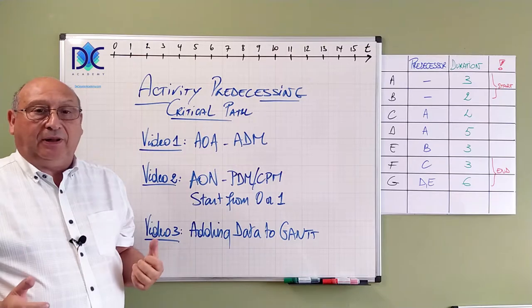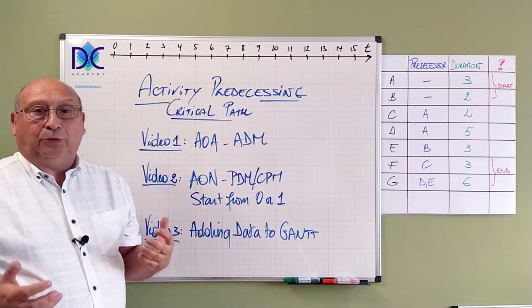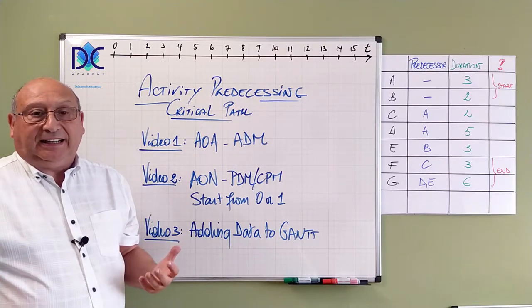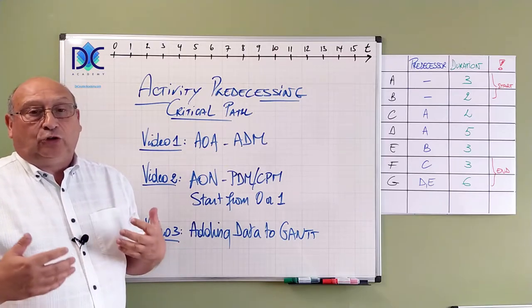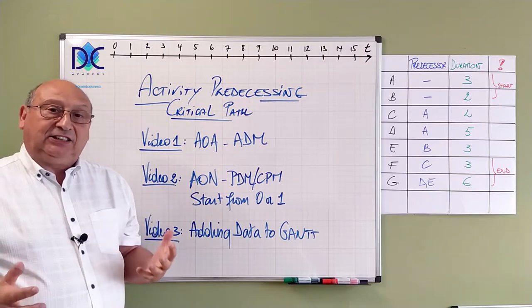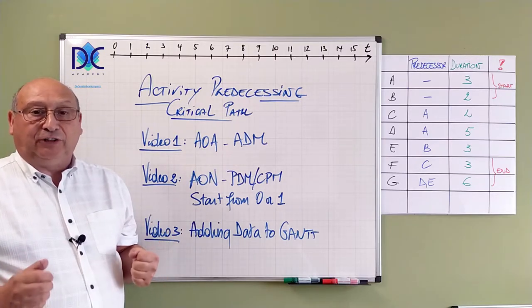When I see that people are asking a lot of questions about precedence diagrams, about calculations. Do I start from zero? Do I start from one? I decided to make this a series of three videos.